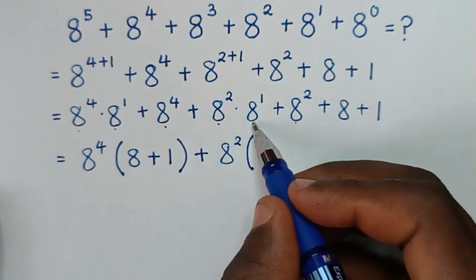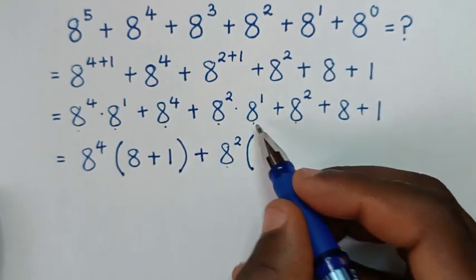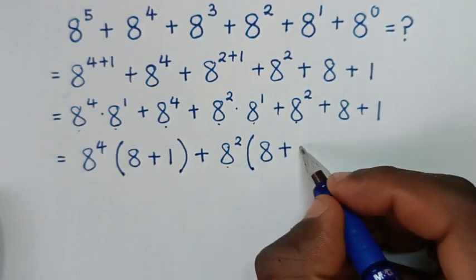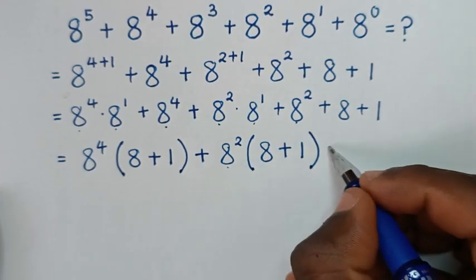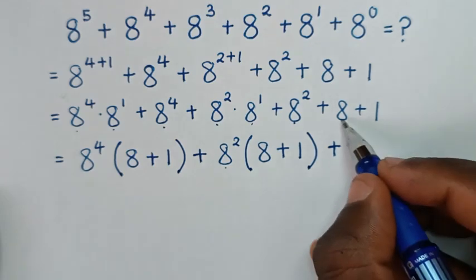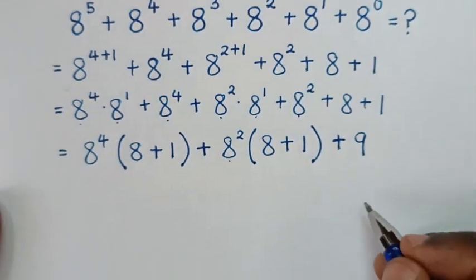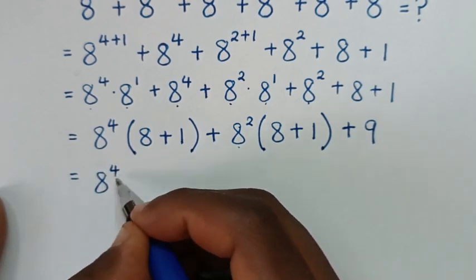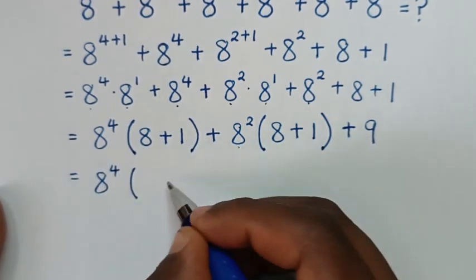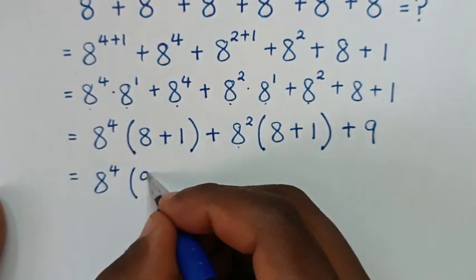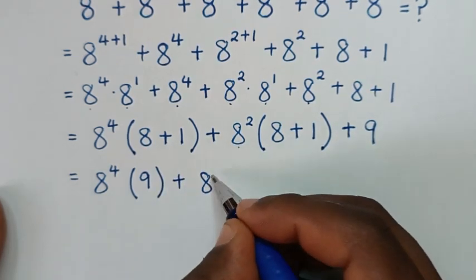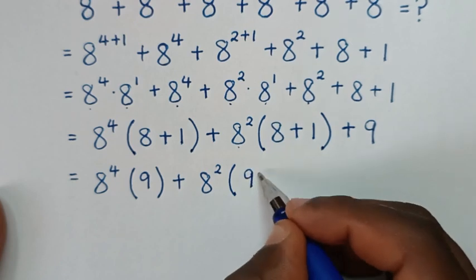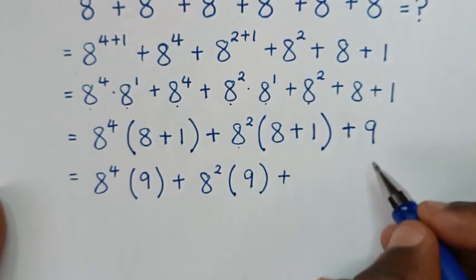Then plus 8 power 2 times 8 power 1 divided by 8 power 2, which is 8 power 1 — that is 8 — plus 8 power 2 divided by 8 power 2 which is 1, bracket. Then plus 8 power 4, then plus 8 power 4, then bracket 8 plus 1 is 9, bracket, plus 8 power 2, bracket 8 plus 1 is 9, bracket, then plus 9.